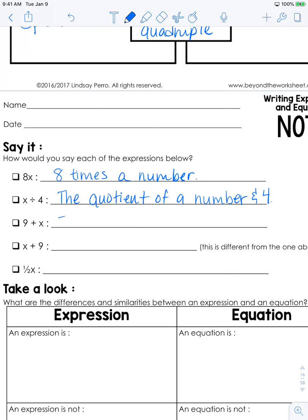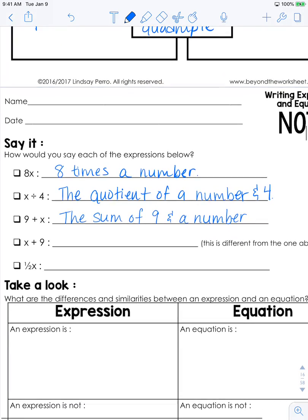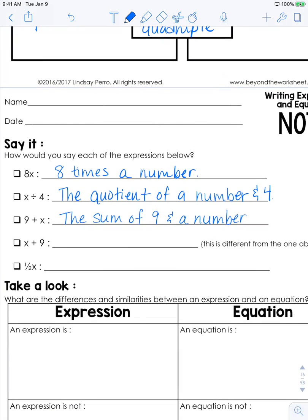9 plus x can be read as the sum of 9 and a number. It can be read as 9 plus a number, or a number more than 9. This one, you might think it's the same, but it's actually different from the one above. This time we can say 9 more than a number, because 9 is coming at the end. If you have 9 more than something, it means you started with a different amount and then you added 9 onto it, whereas the one before, you started with 9 and you added another amount onto it.